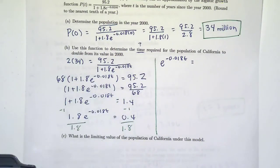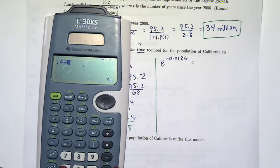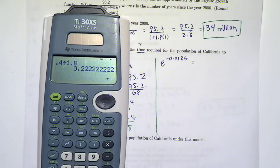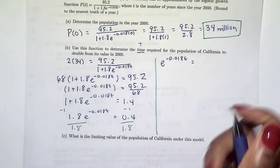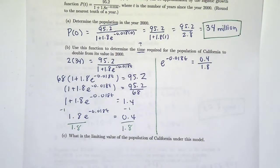Alright, so again, trying to solve for t. What do I need? It's in the exponent, I need to get it out of the exponent. So I'm going to take the natural log of both sides.